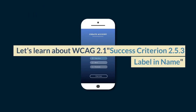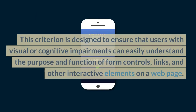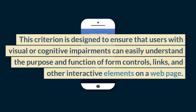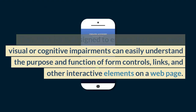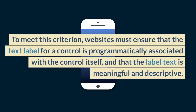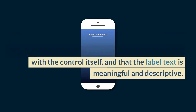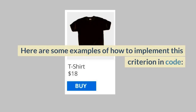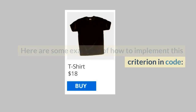Let's learn about WCAG 2.1 Success Criterion 2.5.3 Label in Name. This criterion is designed to ensure that users with visual or cognitive impairments can easily understand the purpose and function of form controls, links, and other interactive elements on a web page. To meet this criterion, websites must ensure that the text label for a control is programmatically associated with the control itself, and that the label text is meaningful and descriptive. Here are some examples of how to implement this criterion in code.